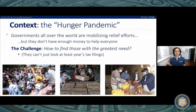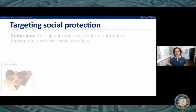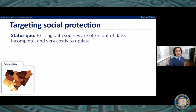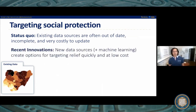In the middle of a pandemic, when you're trying to social distance and minimize human interaction, it's very difficult to collect this sort of information using traditional methods. The status quo existing data sources are often out of date, incomplete, and can't be updated quickly. So what I'm going to focus on is some out-of-the-box solutions that several governments are exploring to help fill these data gaps, leveraging new data sources and machine learning.